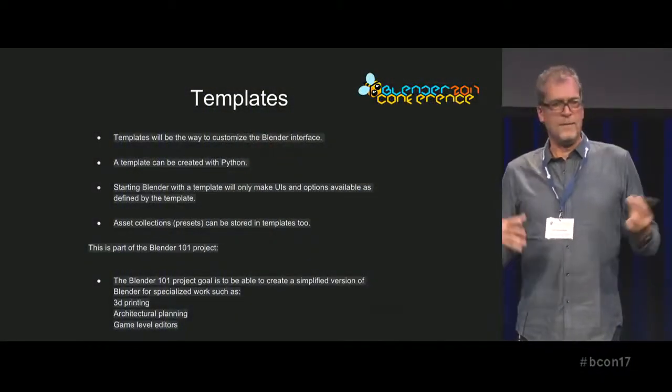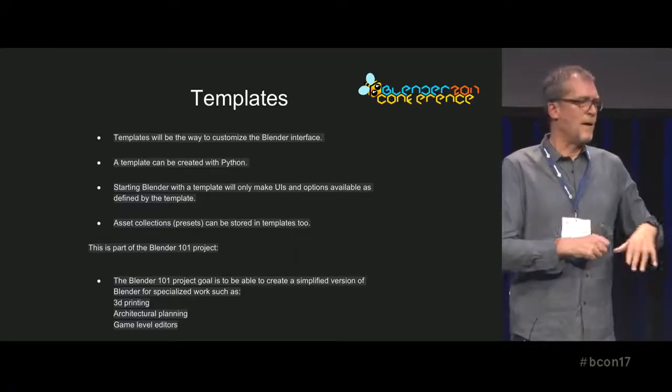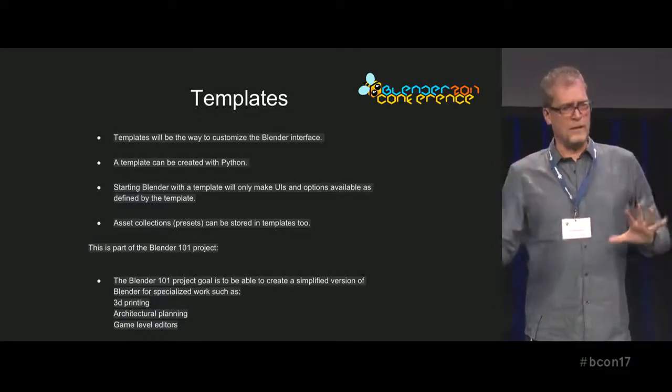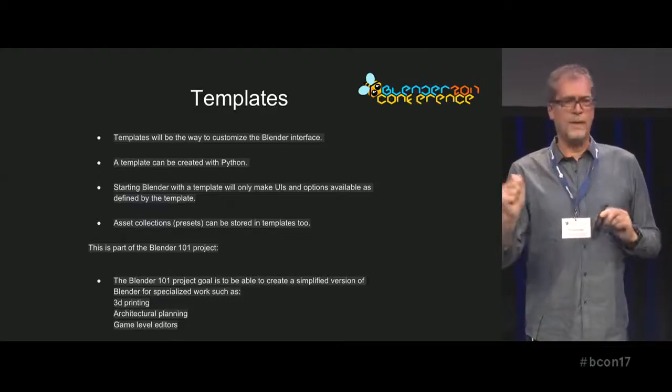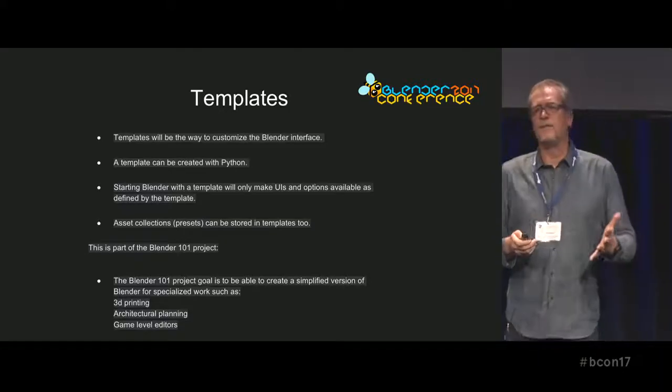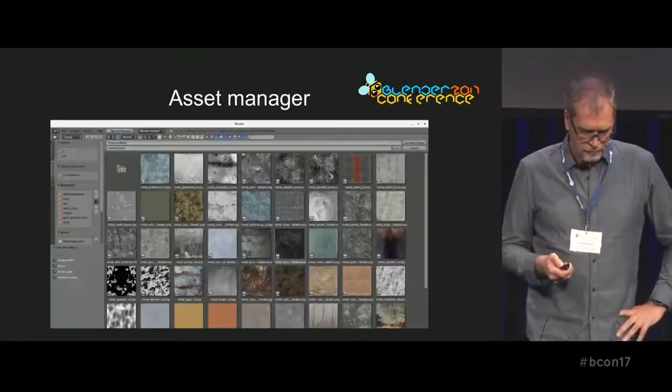To be clear, Blender 101 is not going to be one version of Blender code called 101 — it's a concept. As proof of concept, we're going to build a first version for 3D printing, which our sponsor is paying for. They would like a version of Blender more accessible for occasional users who want to do 3D printing. Blender is great for 3D printing but has 95,000 other options, so if you remove all that and only leave options for sculpting, modeling, import and export, you have a 3D printing configuration. That's what the templates will do.